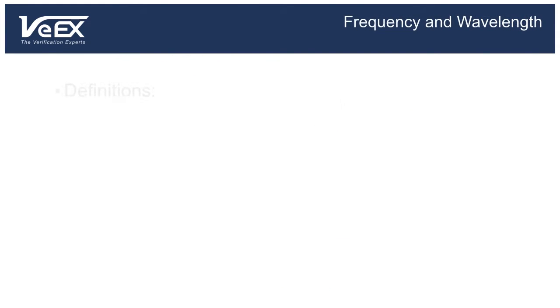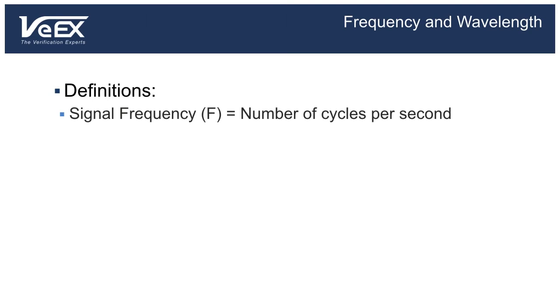RF signals are characterized by their frequency. The frequency is the number of cycles the electromagnetic wave makes per second, which is measured in Hertz. A signal of 1 Hertz has 1 cycle per second, and a signal of 1 gigahertz has 1 billion cycles per second.